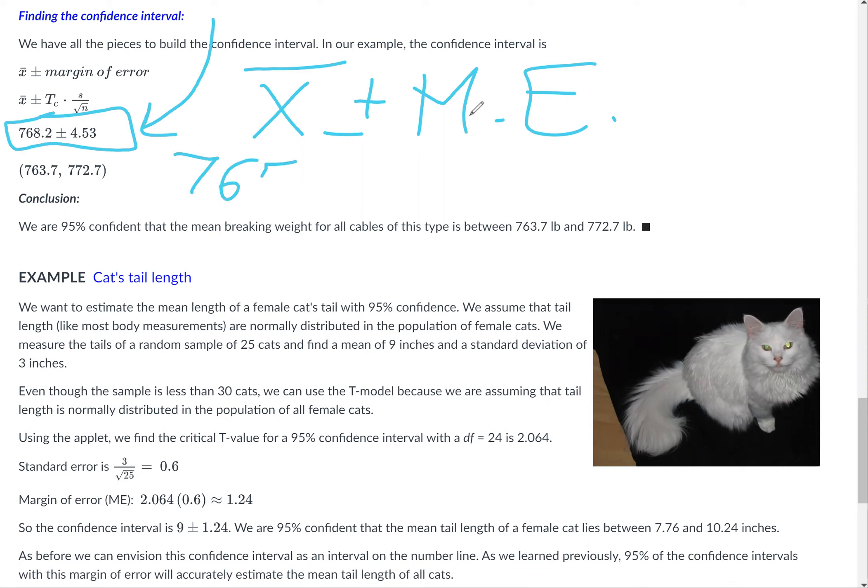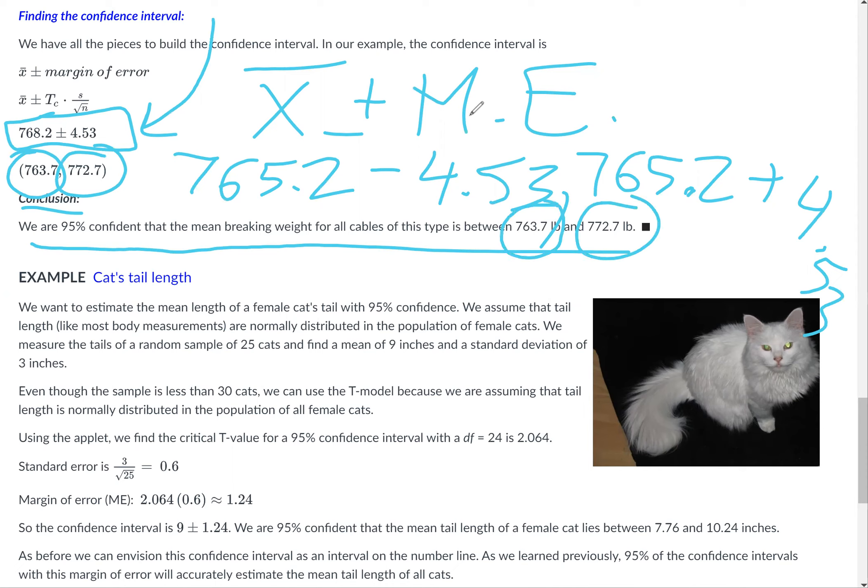If you take 768.2 and subtract 4.53, you get 763.7. If you add, 768.2 plus 4.53, you get 772.7. In conclusion, we are 95% confident that the mean breaking weight for all the cables of this type is between 763.7 and 772.7 pounds.